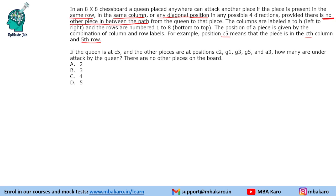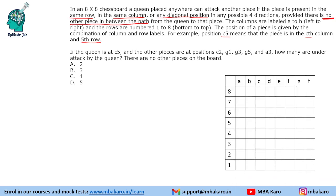The first question is: if the queen is at C5 and the other pieces are at C2, G1, G3, G5, and A3, how many are under attack by the queen? There are no other pieces on the board. We can clearly see that C2 and G5 are under attack, and drawing the diagonal, G1 and A3 are also under attack. So four pieces are under attack.